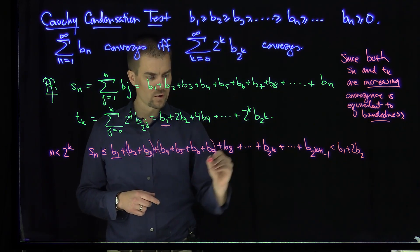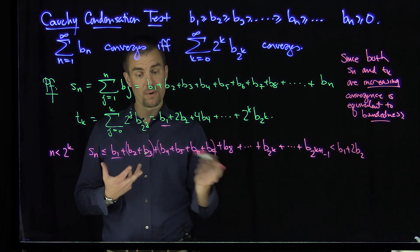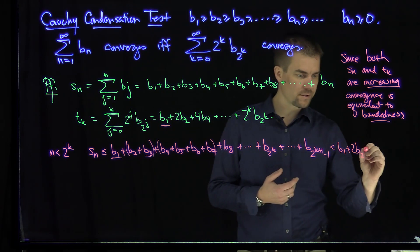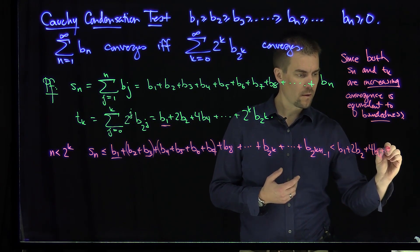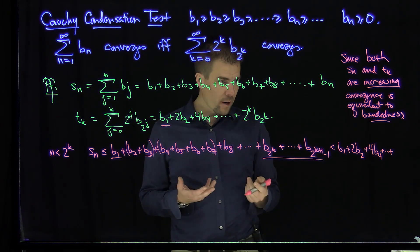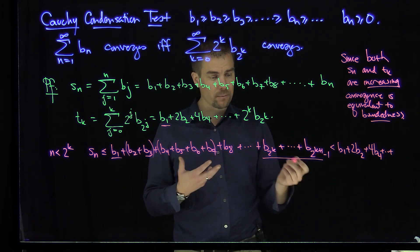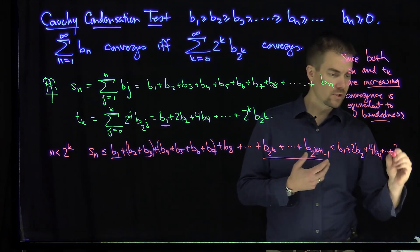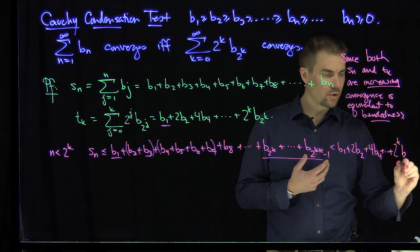I can look at these next four terms over here and replace them all with B4. So I'll have four B4s all the way down to the last chunk over here. I have 2 to the power of k of those things, and I'll replace them all with B to the power of k. So this is 2 to the power of k times B to the 2 to the power of k.